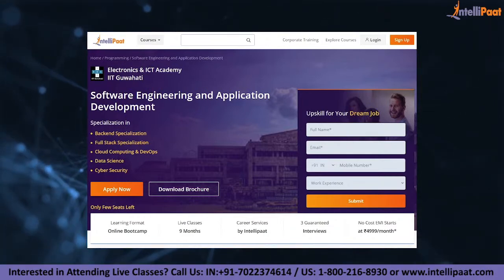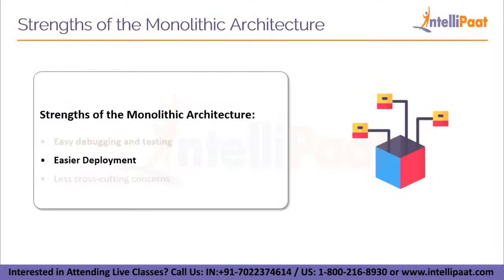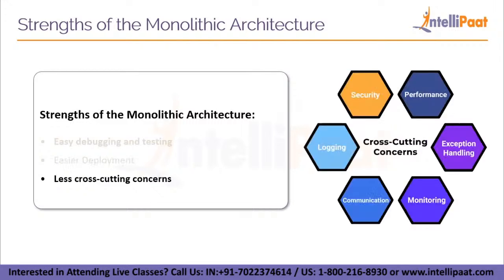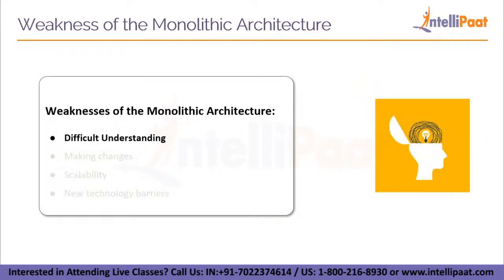When it comes to monolithic applications, you only have to deal with one file or directory deployment. Less cross-cutting concern worries: problems that influence the entire application — such as logging, handling, caching, and performance monitoring — are examples of cross-cutting concerns. This section of functionality only affects one application in a monolithic program, making it easier to manage.